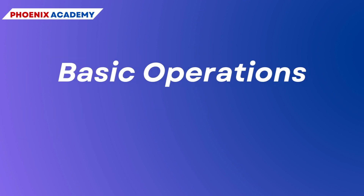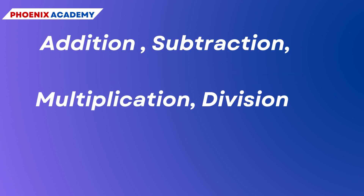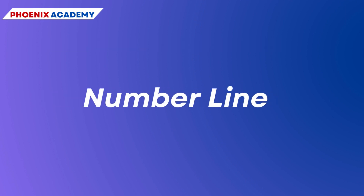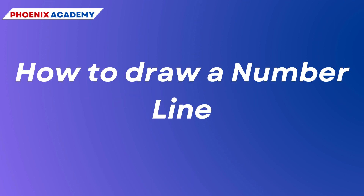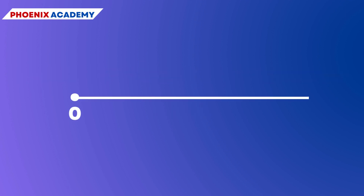In previous classes you learned to perform all basic operations — addition, subtraction, multiplication, and division — on numbers. Now let us try these operations on a number line. To draw a number line: draw a line, mark a point on it and label it 0, then mark a second point to the right of 0 and label it 1. The distance between points 0 and 1 is called a unit distance.